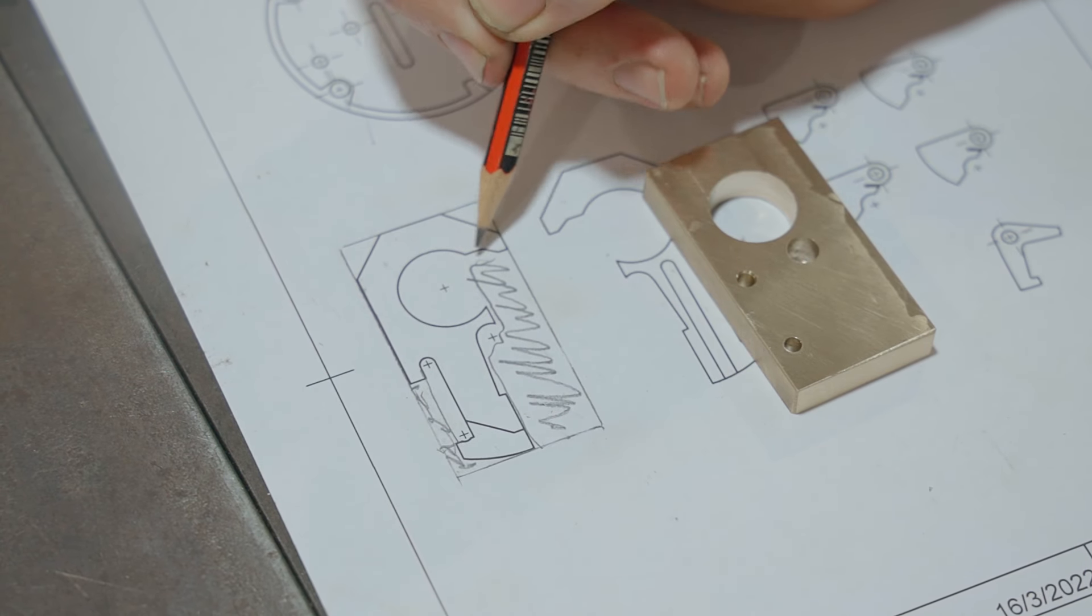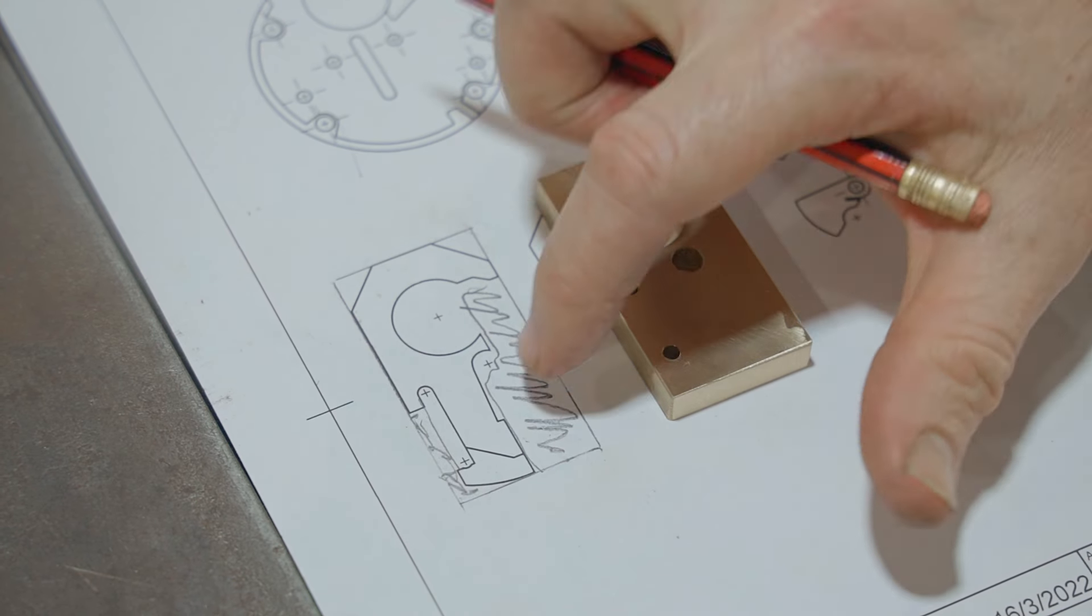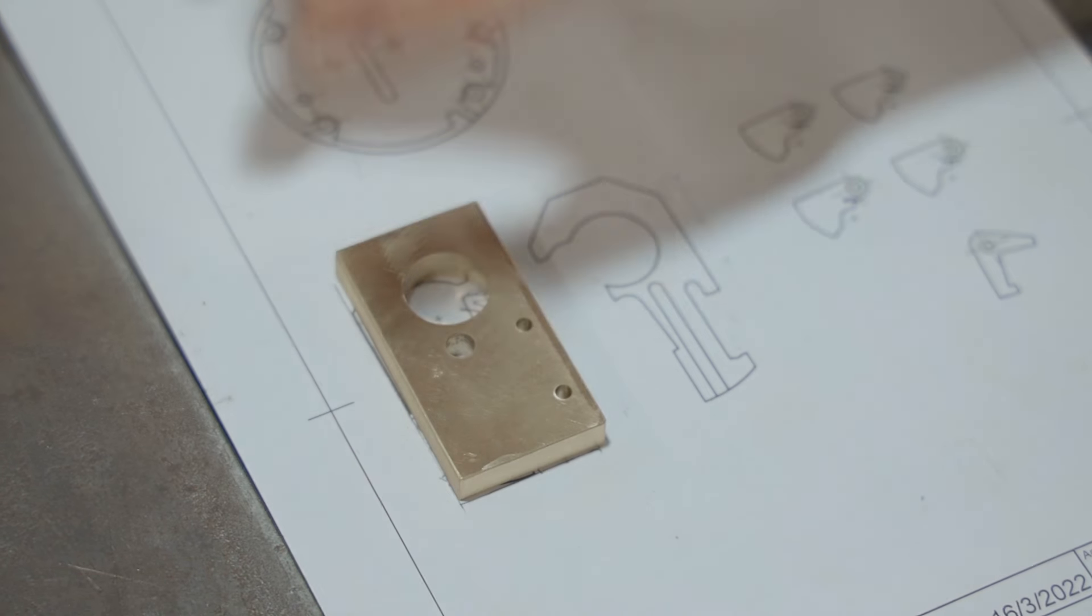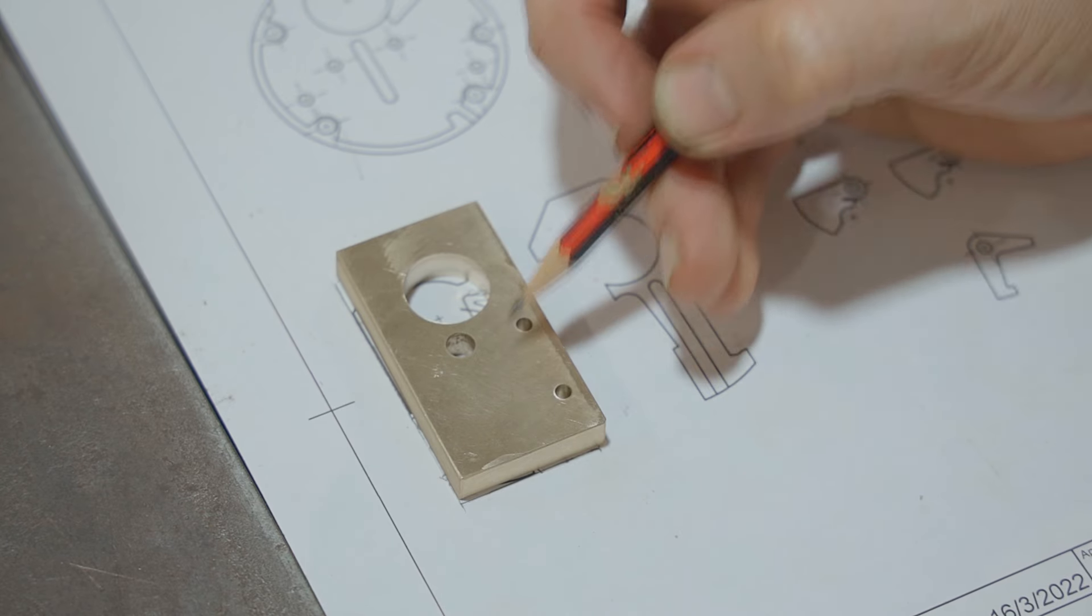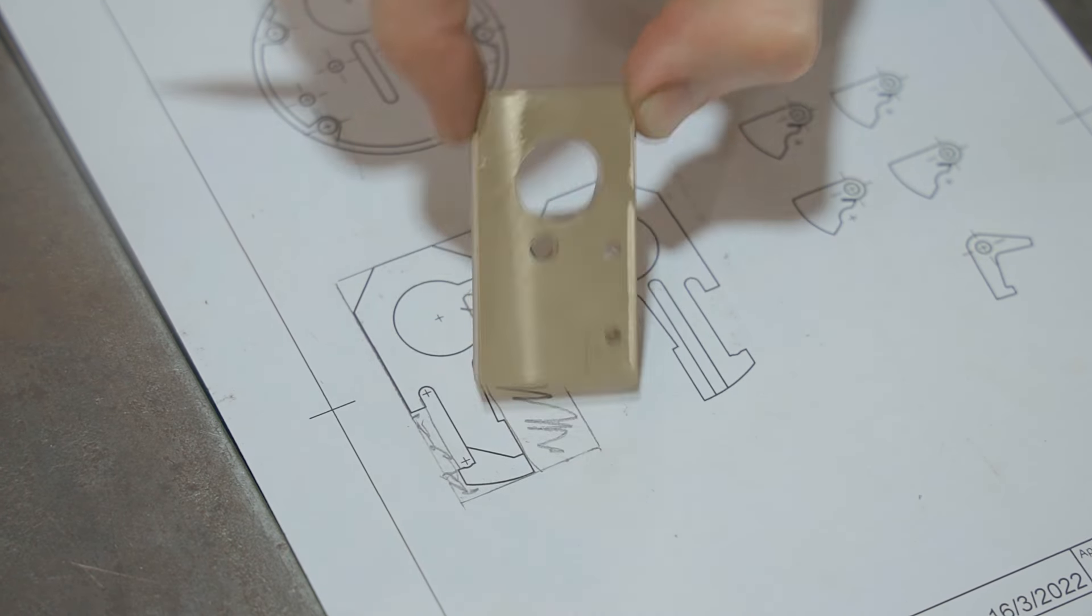I'm not sure whether I'll mill this or whether I'll just file it into shape, but before I do that and cut it away I do need to mill a keyway on the back here, and that would be better to do now while I've still got the sides to reference off.